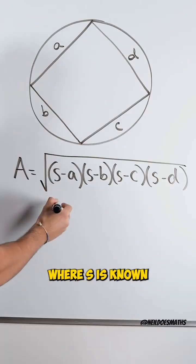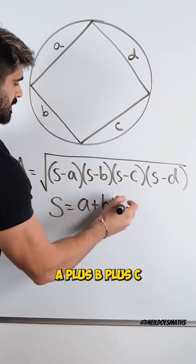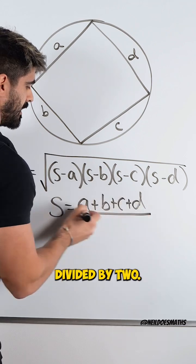Where s is known as the semi perimeter where we add up all of the lengths of our rectangle a plus b plus c plus d divided by two.